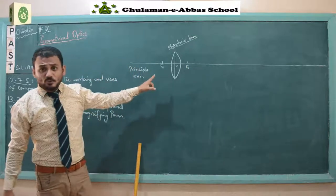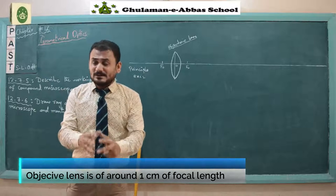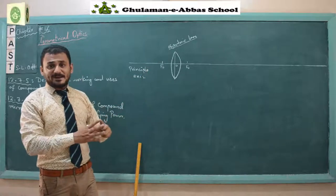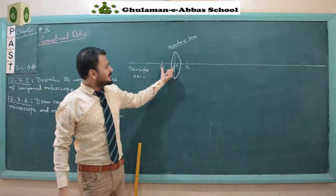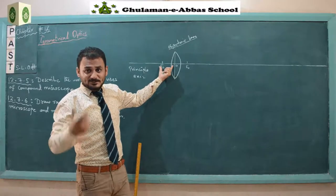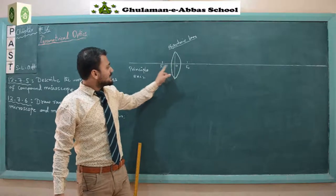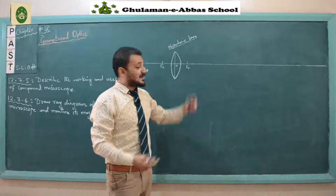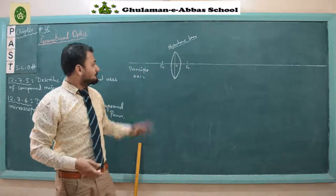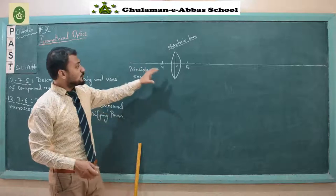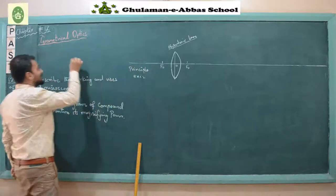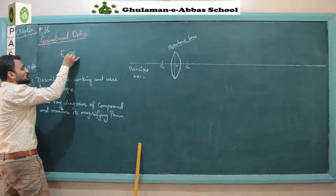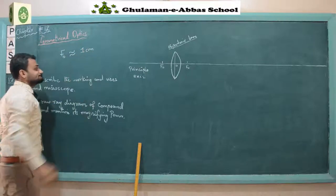The focal length of the objective lens is usually almost one centimeter. For the purpose of drawing an enlarged ray diagram, I have taken the focal length here as 10 cm in this example. So from O to focal length, I have kept the distance of 10 cm on each side. The focal length of the objective lens is almost 1 cm.